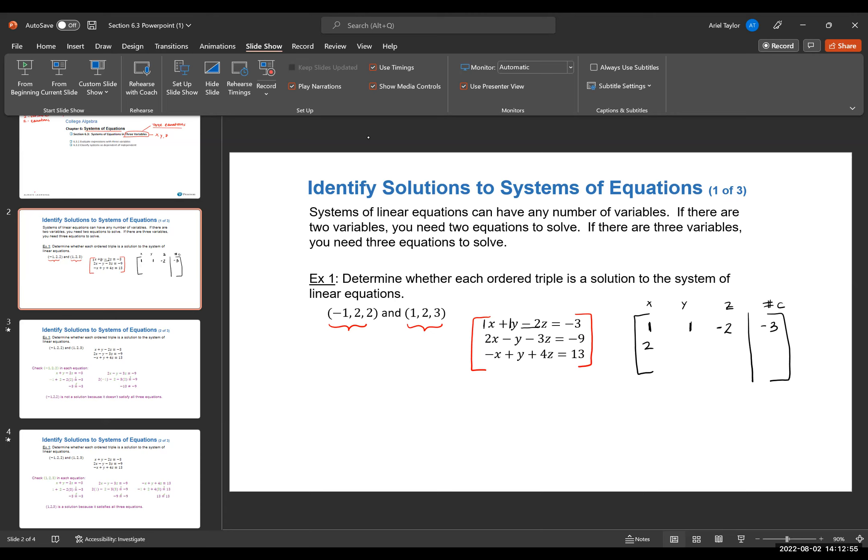So then we have 2, negative 1, negative 3, negative 9. This again is negative 1. So pay attention to that. And then you have negative 1, 1, 4, and 13. So if it's a positive number, we just put that. And if it's a subtraction, we're going to write that as a negative number.